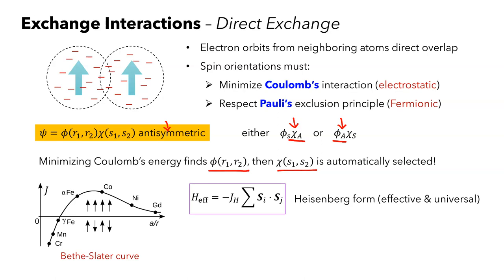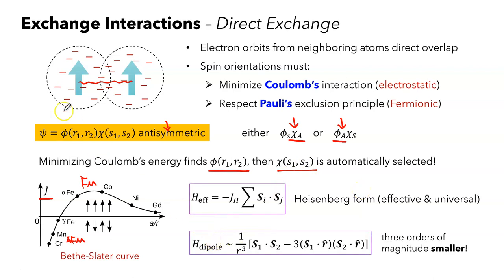The Heisenberg interaction is quite universal. Regardless of the microscopic details, the effective spin-spin interaction always ends up with a Heisenberg form. Depending on the sign of the Heisenberg exchange interaction, we can classify materials into ferromagnet and antiferromagnet. Because the direct exchange interaction is very sensitive to the interatomic spacing, different materials have quite different Heisenberg J based on their interatomic spacing. In comparison, the dipole-dipole interaction can also couple neighboring spins, but its magnitude is three orders of magnitude smaller, so often it produces only a negligible effect.